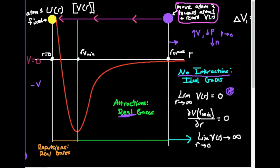Notice we get more and more attractions because the potential energy is becoming more and more negative as we continue to bring these atoms closer and closer to each other. Eventually you'll bring them close enough to get to a point right here — this is described by this limit. It's the limit when the derivative of the potential energy with respect to the radius is equal to zero. In other words, the rate of change is zero — the slope is flat.